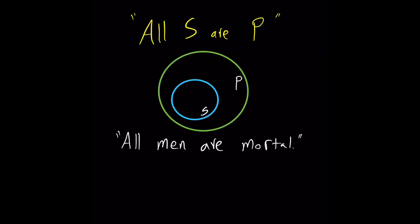Consider the universal affirmative proposition, all S are P. For example, all men are mortal. Men is the subject, mortal is the predicate. Each member of S belongs to P, so the circle S is inside the circle P. We have men within the circle of mortality.